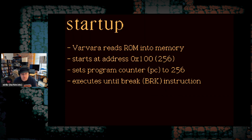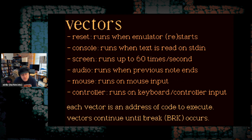When Varvara starts up, it reads the ROM into main memory starting at address 256, sets the program counter to that address, and runs until it receives a break instruction. This phase is called reset since it happens every time the VM starts up or resets. Once the reset vector finishes, the VM runs other code in response to events: the console vector runs when text is on standard input, the screen vector runs up to 60 times a second, audio runs when a sound finishes playing, and the mouse and controller run on their respective inputs. Each vector is just a sequence of assembly instructions that eventually ends in a break.